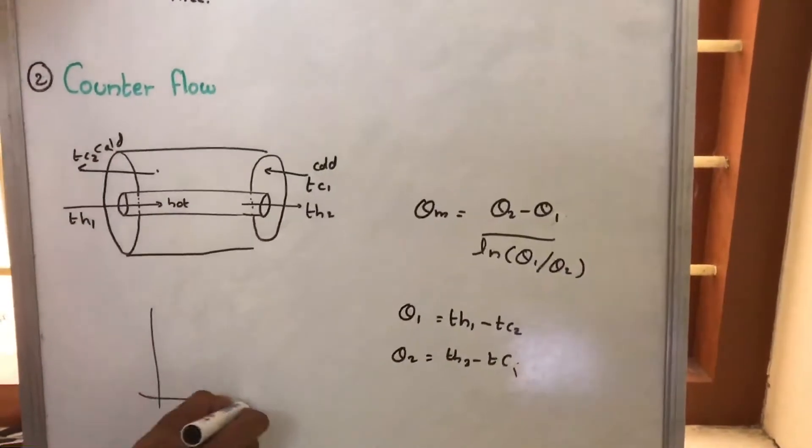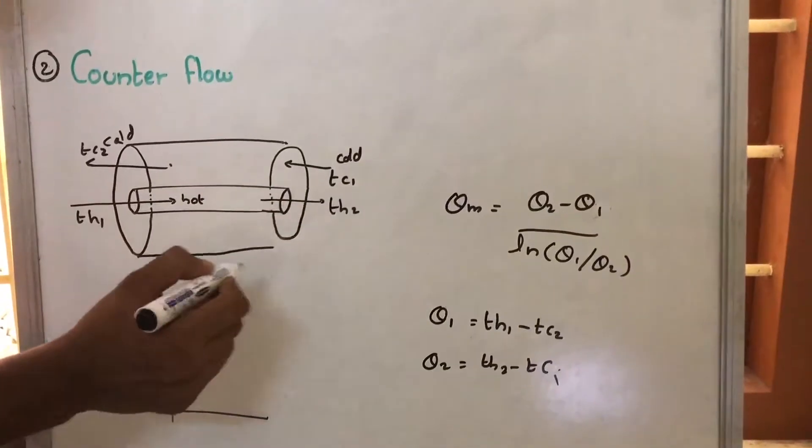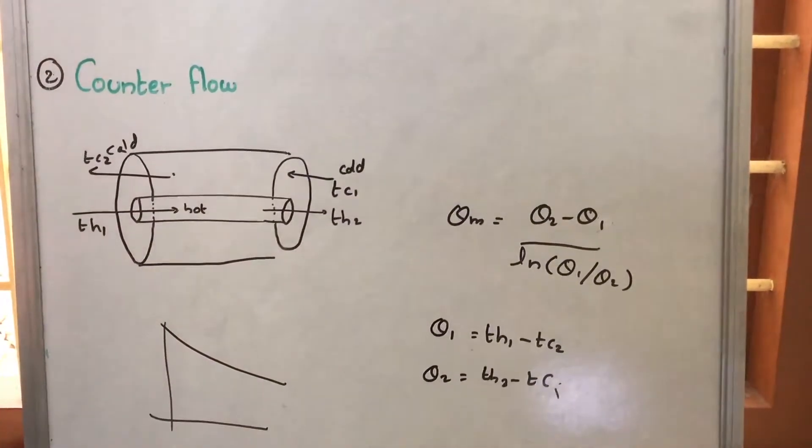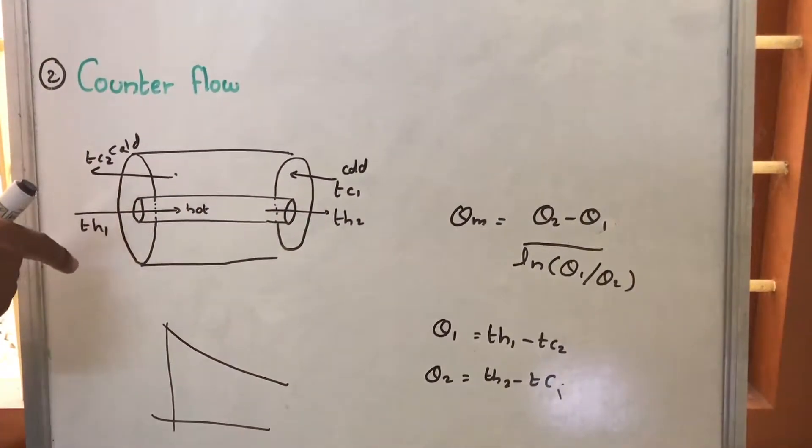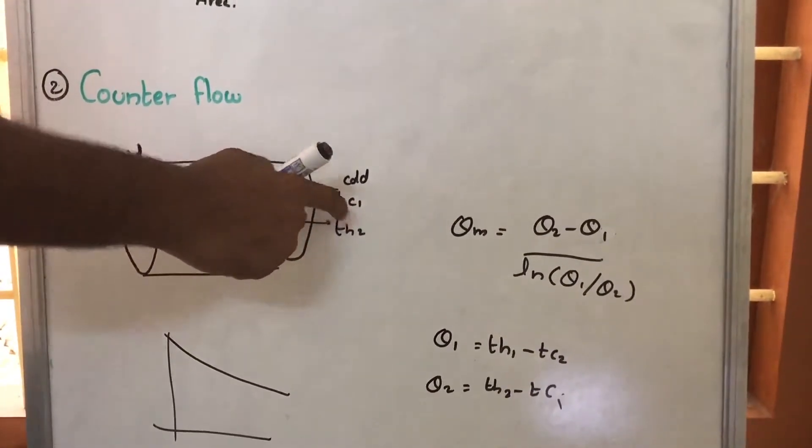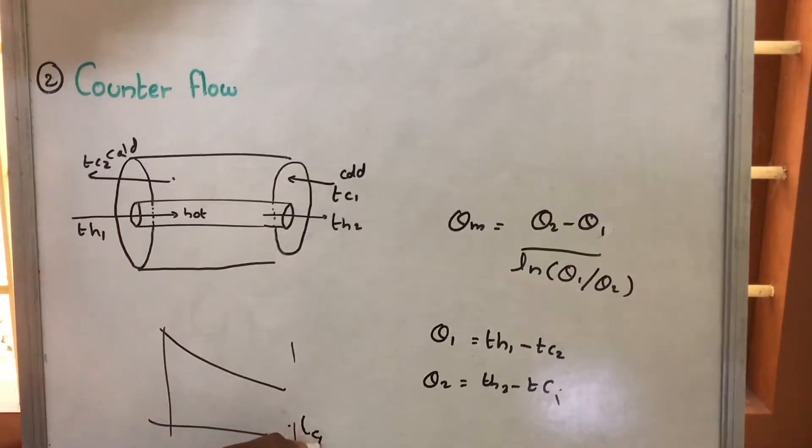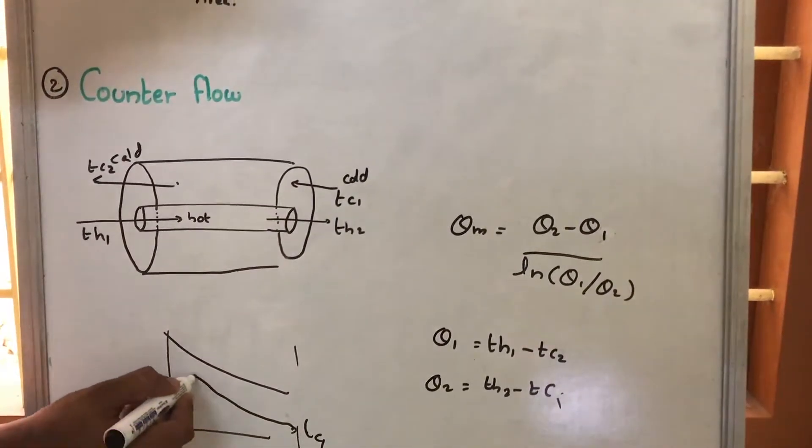So if we are drawing this temperature, for hot fluid as we go in the axial direction, temperature decreases. For cold fluid what happens is, temperature will be minimum here. That is, in this particular part temperature will be TC1, from that it increases to TC2.